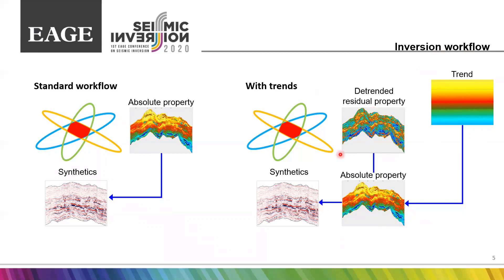The trended residual properties are modeled as stationary variations around the fixed trend. The trended residual properties satisfy the statistical method assumptions. The trend can be facies-dependent and then added to the residuals according to the modeled facies to get the absolute values and correctly calculate reflectivities. Trends are fixed files, meaning that they are the same for all realizations. But facies volumes are modeled independently for each realization, therefore the final combination to create absolute values volume is always unique.